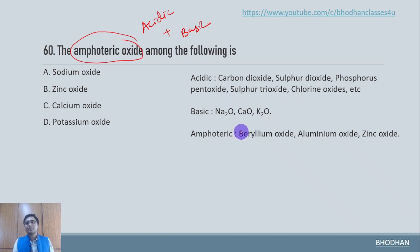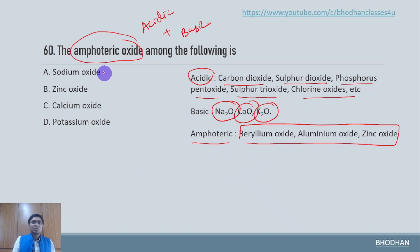Now here are some of the examples which are acidic in nature. Carbon dioxide, sulfur dioxide, phosphorus pentoxide, and sulfur trioxide and so on. And in case of basic oxides we have Na2O, calcium oxide, and K2O potassium oxide, sodium oxide. So in amphoteric oxide, these are the three prominent oxides. So now here we have got sodium oxide which is basic in nature. Zinc oxide which is amphoteric in nature. And calcium oxide which is basic in nature. So the answer over here is zinc oxide.